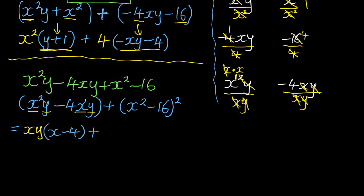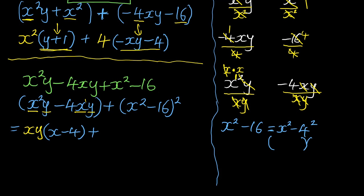Looking at the second bracket, x² - 16: remember the difference of two squares. Since 16 = 4², we have x² - 4², which is a difference of two squares. This factorizes into two brackets: (x - 4)(x + 4).